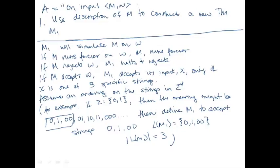This is an example given a specific sigma, but given any sigma we could find an ordering on the strings. We could take the order of the symbols listed in sigma — when we write the description of a Turing machine on the tape, one symbol appears to the left of every other, so there is a way to order the symbols and then the strings. We'll define M1 to accept the first three strings from this ordering, and allow it to accept these three strings only if M accepts W.